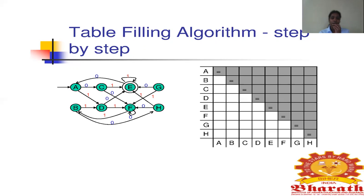Similarly in the vertical direction, you repeat A, B, C, D, E, F, G, and H from left to right. When you take the pairs, they should not be repeated. For example, A and A are equal — the entire diagonal becomes equal. So only one half of the table, either above or below the diagonal, needs to be filled. This is because the cell representing B,A is the same as A,B, so the two halves are mirror images of each other.